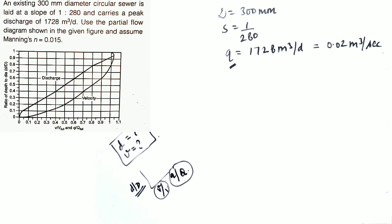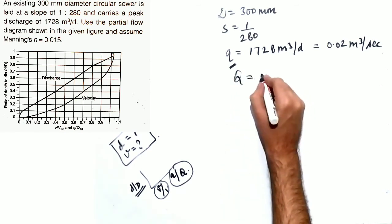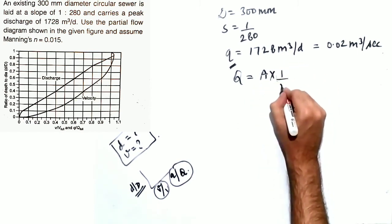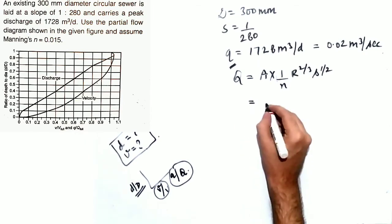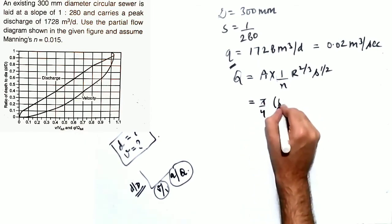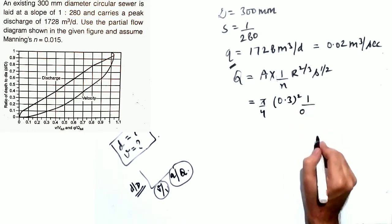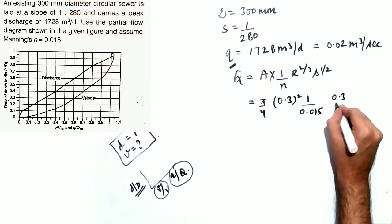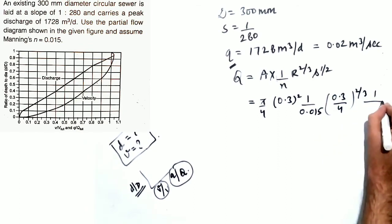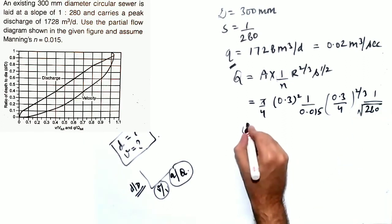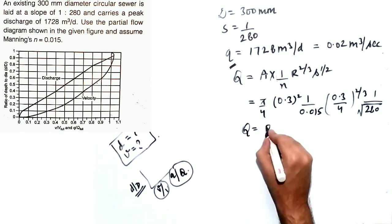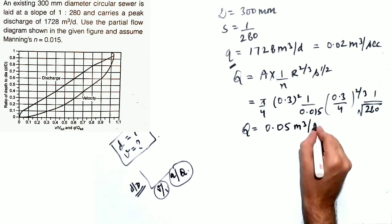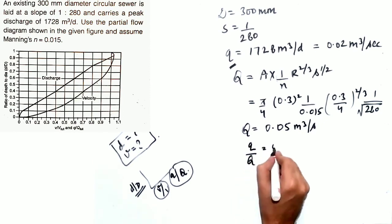Since small q is given, calculate capital Q first. Capital Q = A × V, where V = (1/n) × R^(2/3) × S^(1/2), R = D/4, A = π/4 × D². So: Q = (π/4 × 0.3²) × (1/0.015) × (0.3/4)^(2/3) × (1/280)^(1/2). Solving gives capital Q = 0.05 m³/s.